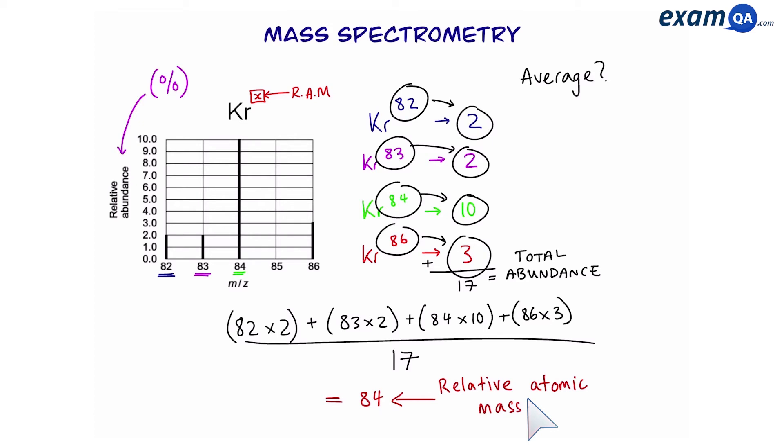Now sometimes relative abundance can be given as percentage. The only difference now is that we have to divide by 100 and remember that all of the abundances will add up to 100%. The rest of the calculation is the same.